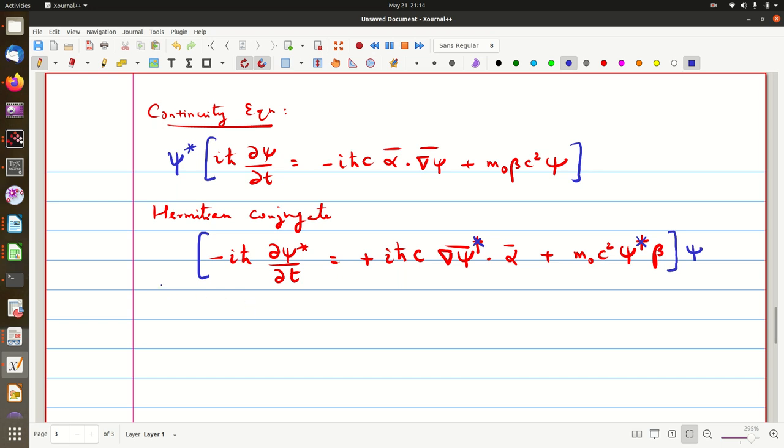So now you subtract one from the other. You subtract the second equation. So you get i ℏ times ψ* ∂ψ/∂t plus ψ. And because we have subtracted one from the other, minus or minus will become plus.